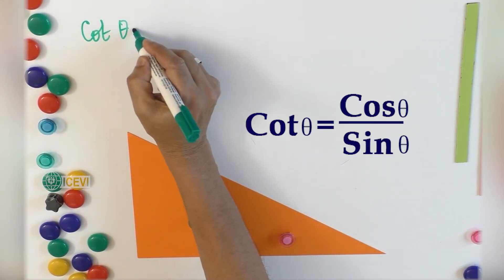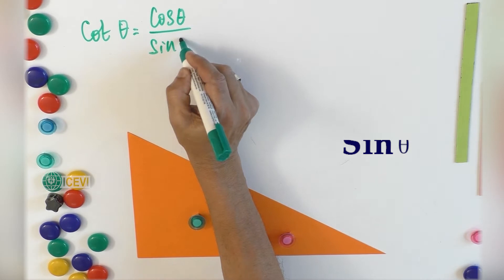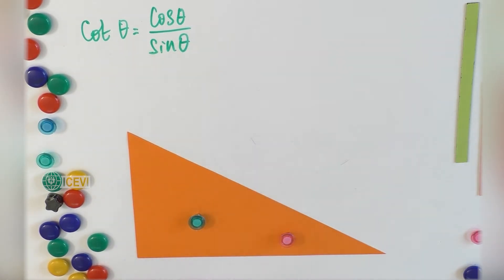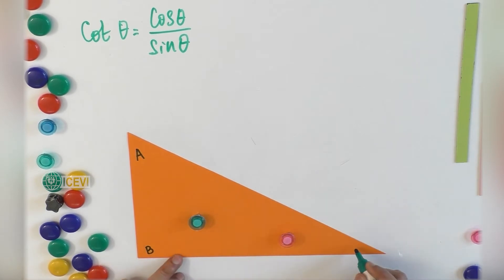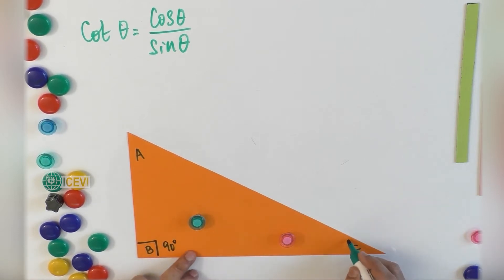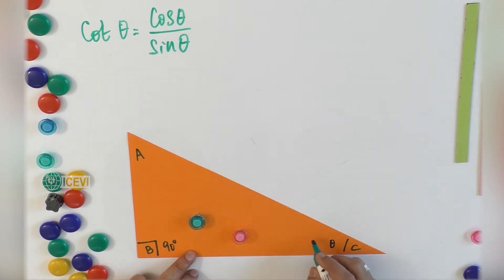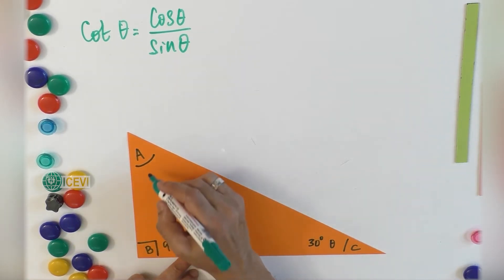cot theta equals cos theta divided by sin theta. Let us take a right angle triangle with three angles as A, B, and C, where angle B is 90 degrees. Now let us take angle C as the reference angle, which is theta, and in this case this is 30 degrees. Now angle A, which is the other acute angle, is 60 degrees.